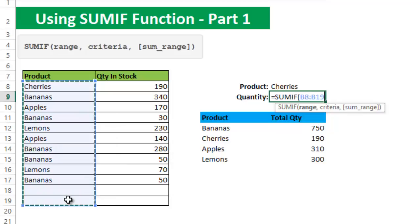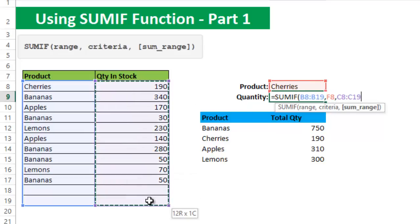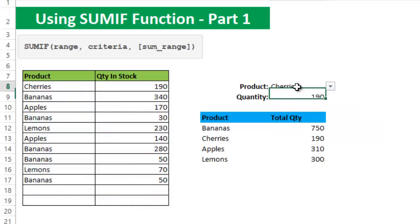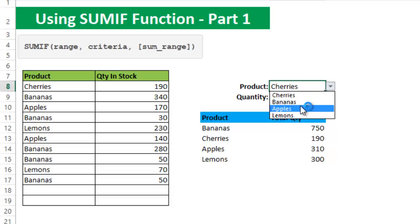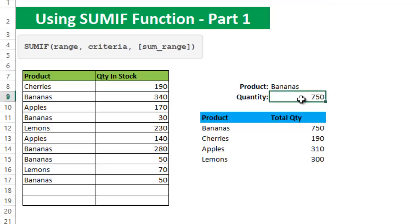For the criteria, instead of writing it directly in the formula, I reference the criteria from another cell in Excel. The reference is here — FH — comma, and sum range. Close the parenthesis and press Enter. Based on the criteria cherry, the total quantity is 190 — exactly the same. Let's try changing the product to see how the total quantity changes. Selecting banana, the total quantity will change based on the item selected in the product cell.